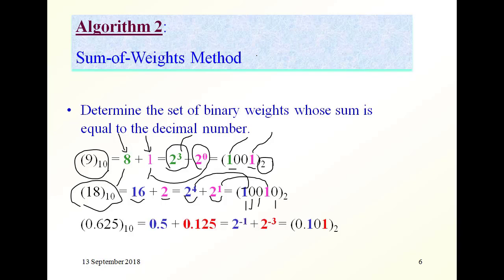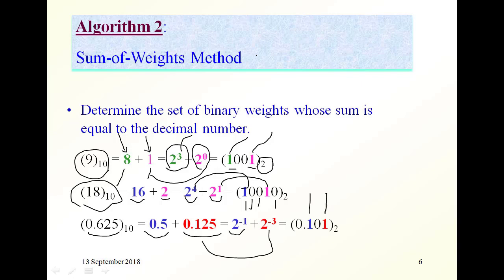In this example, this is a fractional part. This number is equal to 0.5 plus 0.125. The 0.5 is 2 to the power of minus 1, so where the weight is minus 1 there is a 1. And 0.125 equals 2 to the power of minus 3, so in that position there is a 1. The positions are minus 1, minus 2, and minus 3. This is the new number.